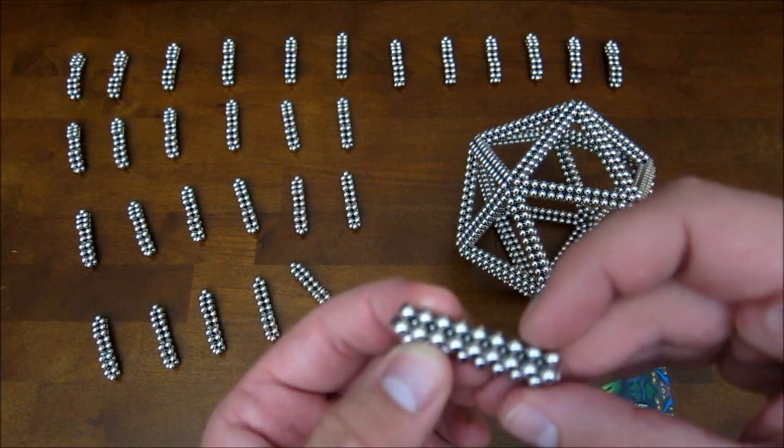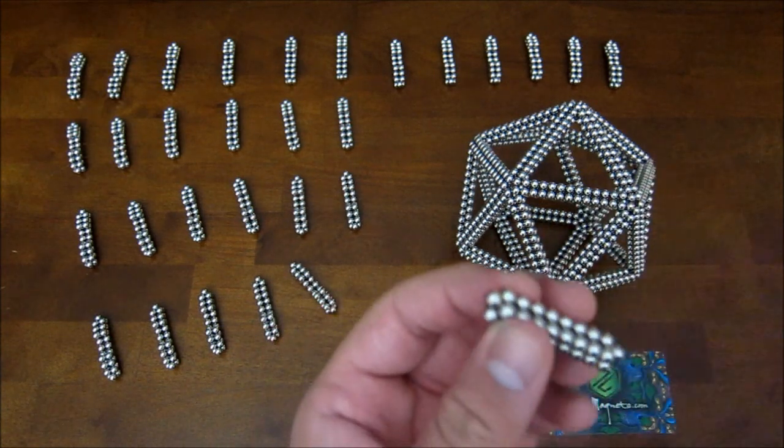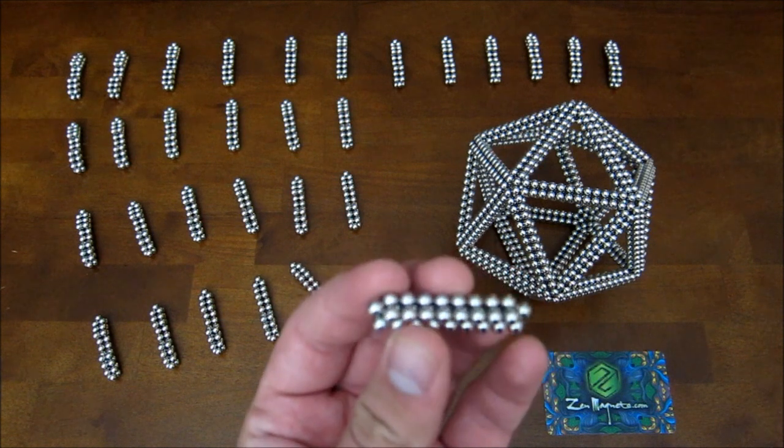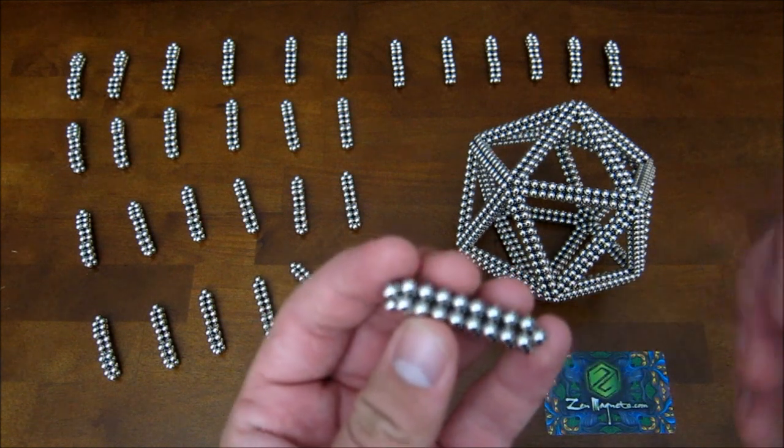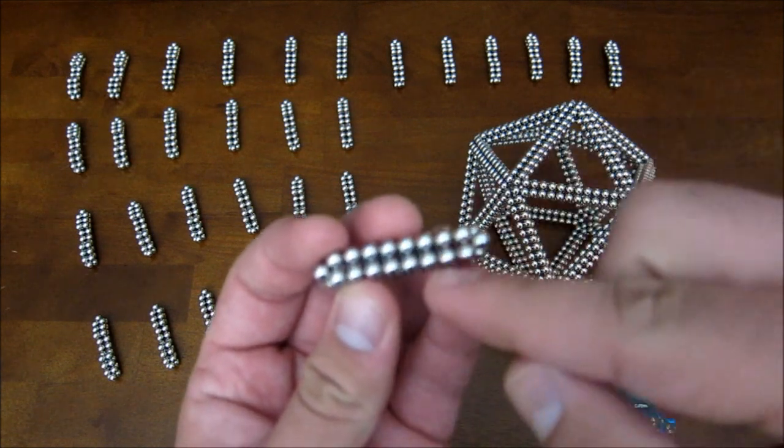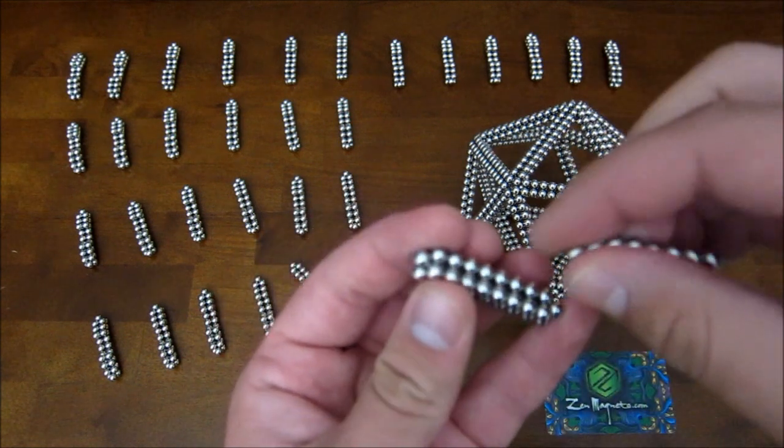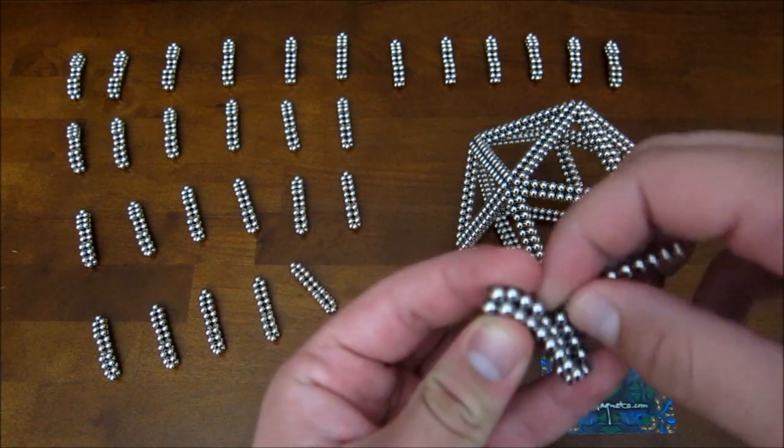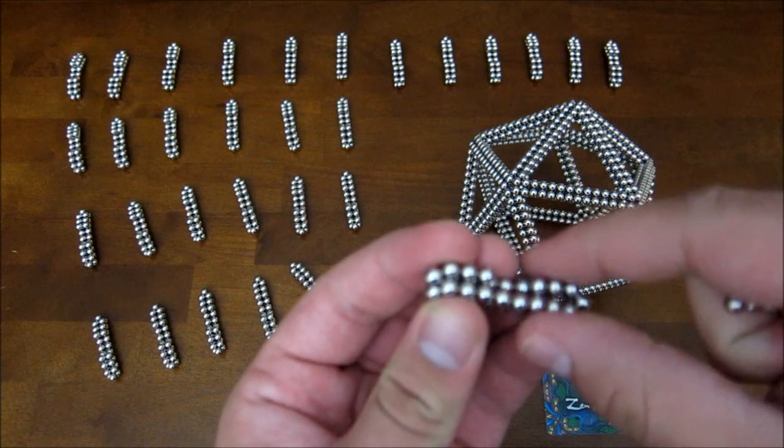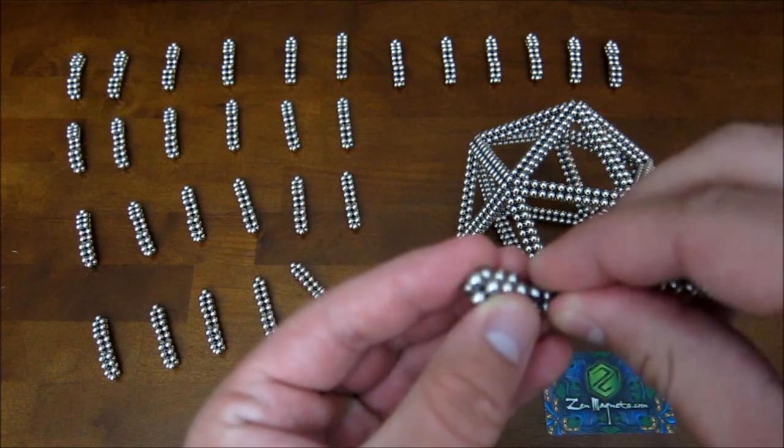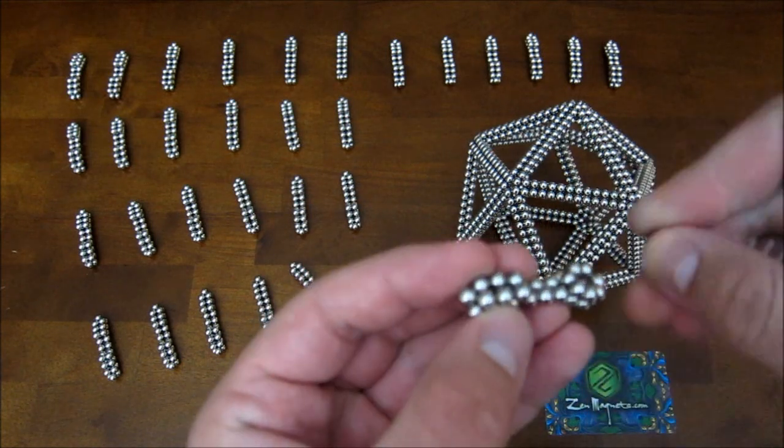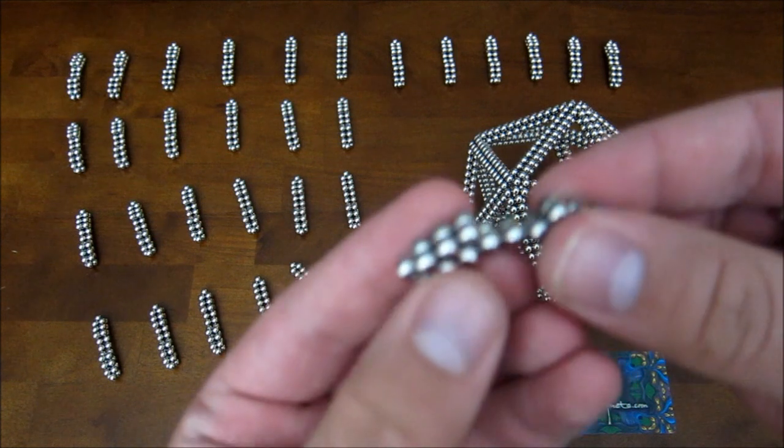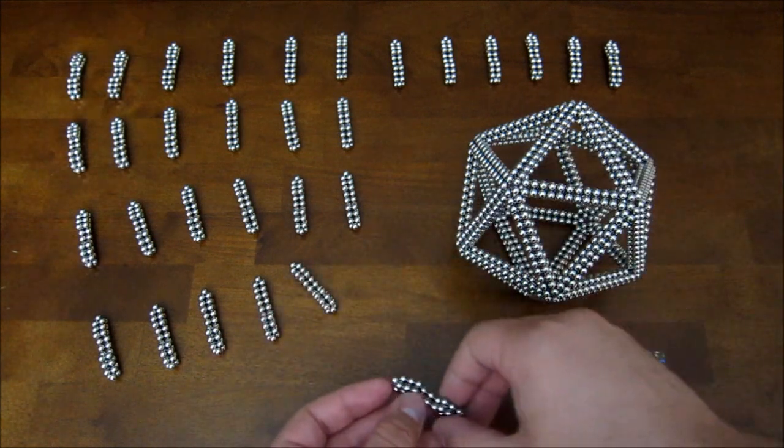And on the underside of it that ends in points, you take a chain and you take out the four magnets in the middle. Just like that. And that's how you get these pieces.